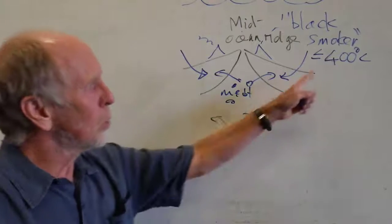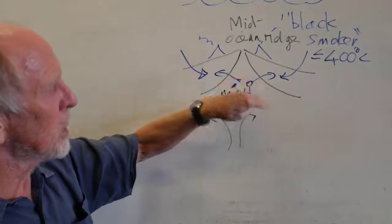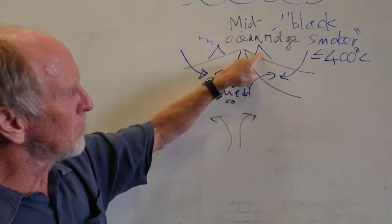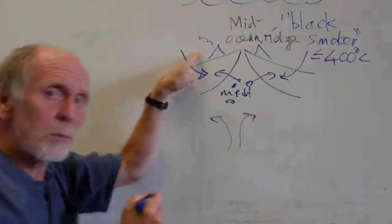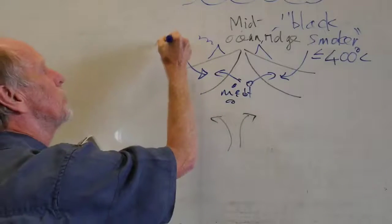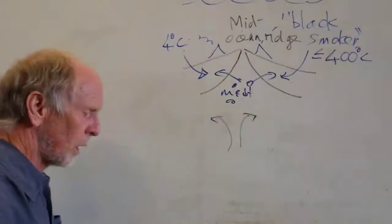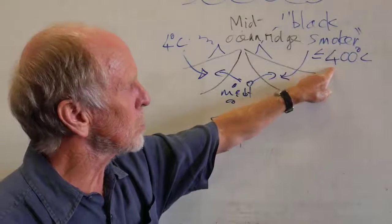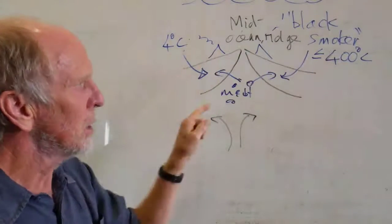When the hot water, which has been heated by proximity to the magma chambers below the ridge and then circulates back up to the ocean floor—ambient temperature of the ocean floor, let's say 4 degrees Celsius, it can be even colder than that—the shock of going from 400 degrees Celsius water into 4 degrees...